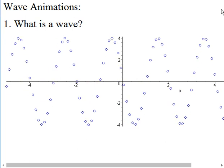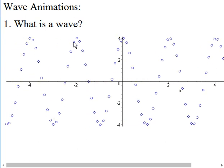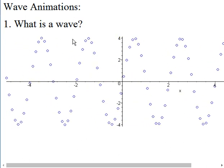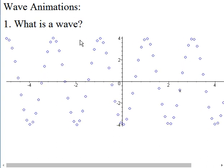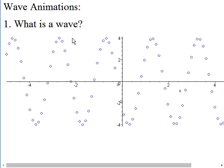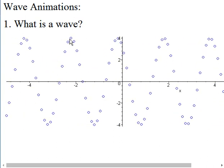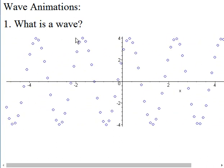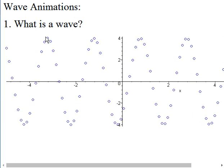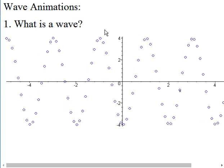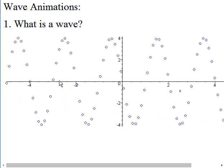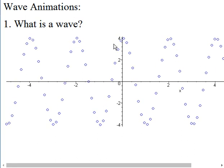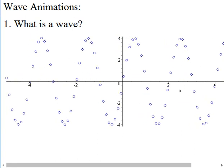We can take a stopwatch and time how long it takes for one crest to leave and another to arrive — that's what we call the period. We can also take a ruler and measure from crest to crest to find how many meters it takes for the pattern to repeat itself, and that's the wavelength.